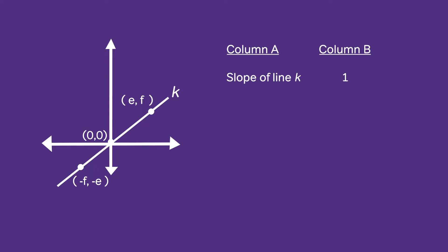To begin, we can use these two points to calculate the slope of line k. The slope will be equal to f over e, so column A is equal to f over e.